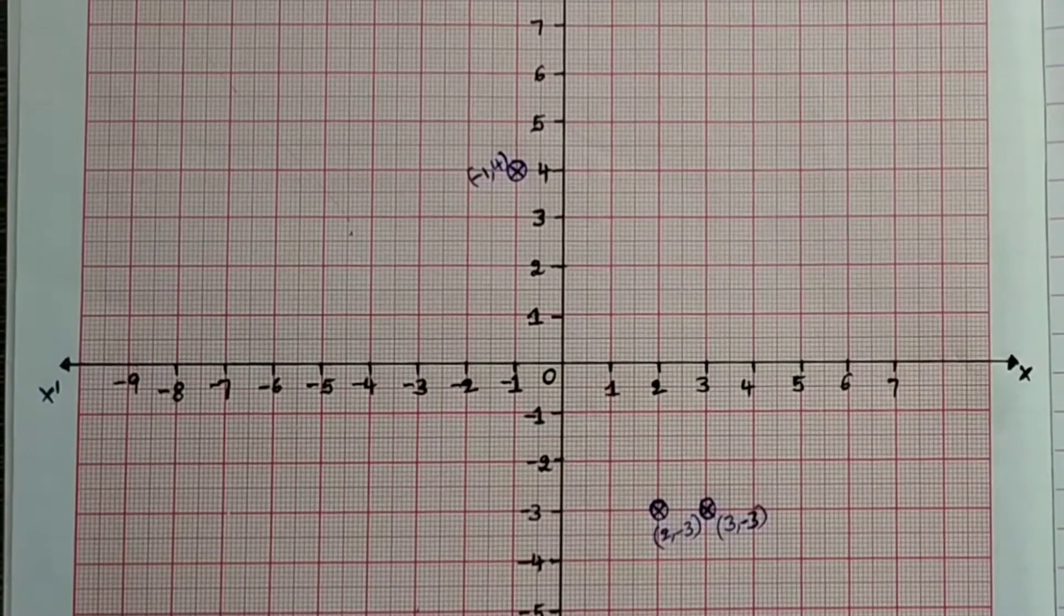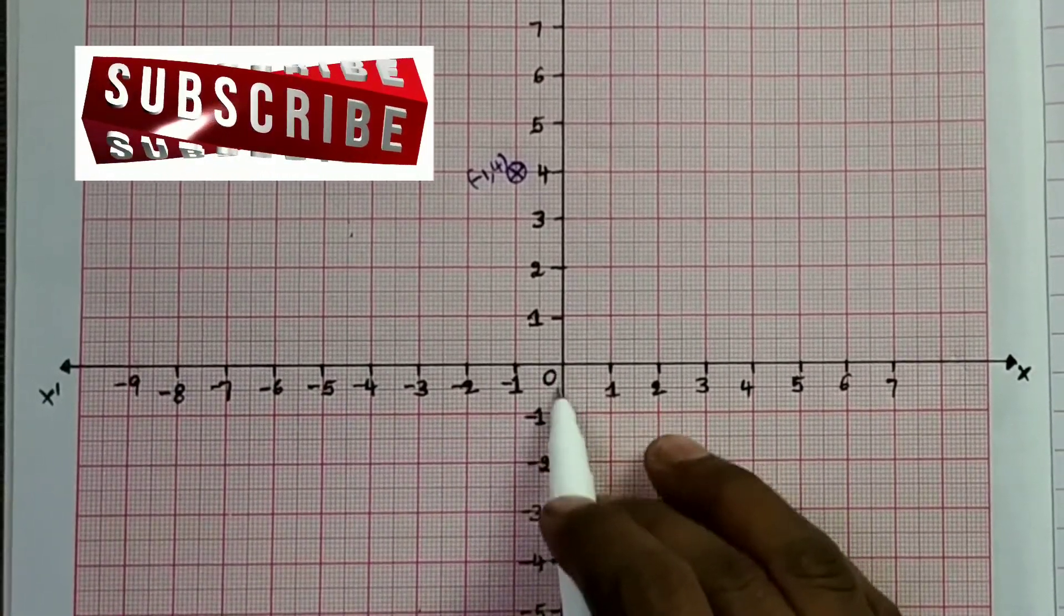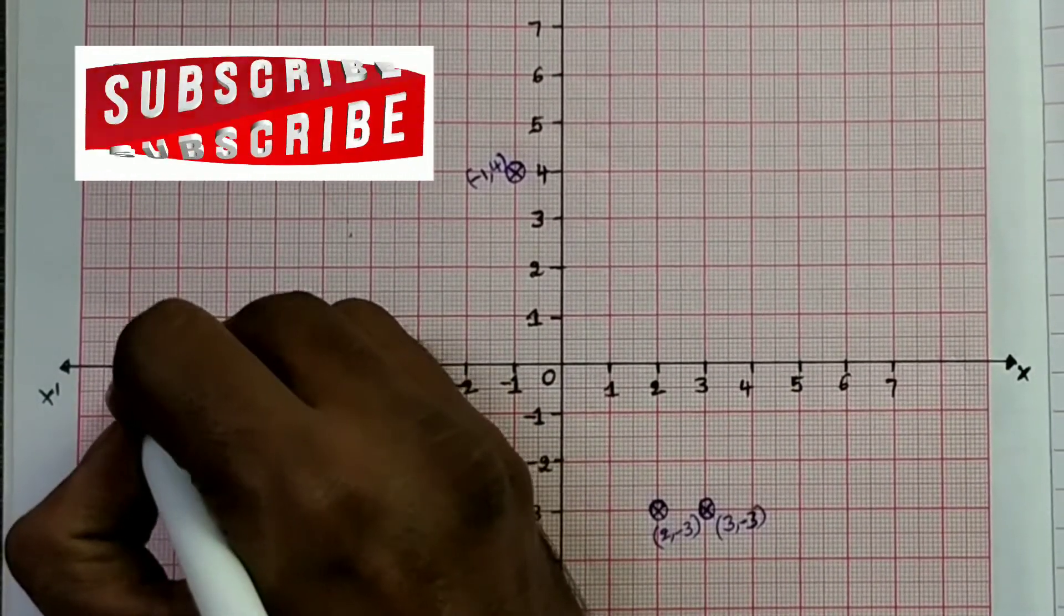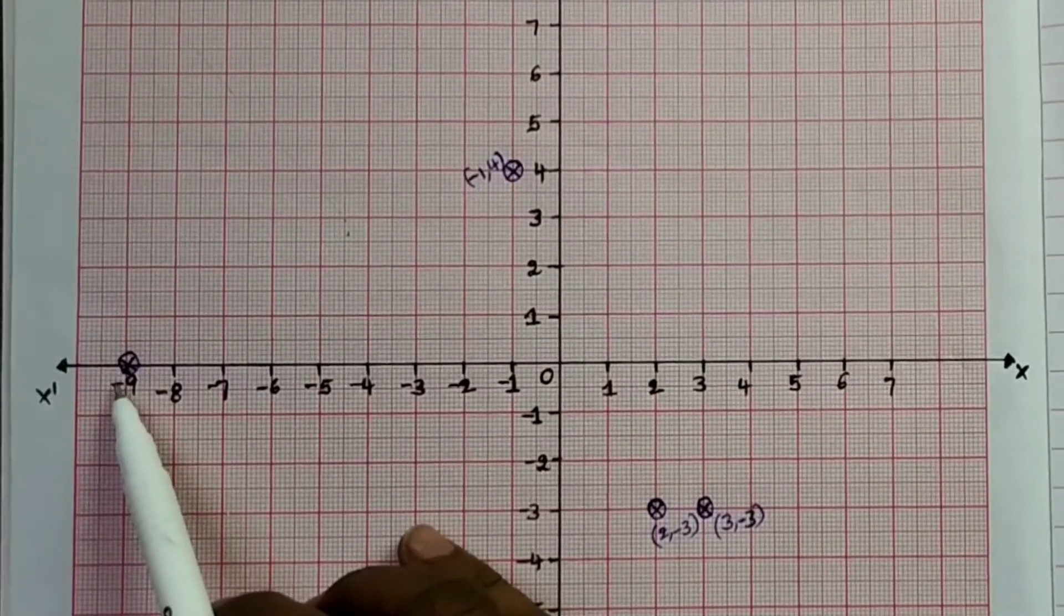The next point is (-9, 0). So this point is (-9, 0).